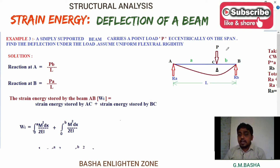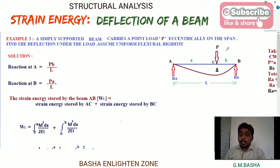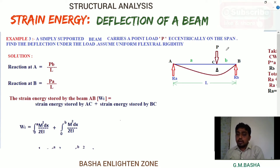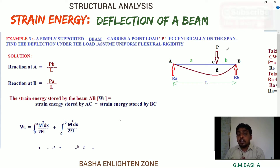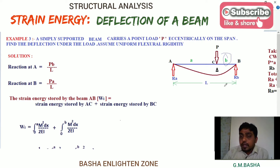If a concentrated load P is acting exactly at the center, reactions at A and B will each equal P/2. Similarly, for a uniformly distributed load, reactions at A and B each equal WL/2. But here, a concentrated load is placed eccentrically on the span, so you must remember directly: reaction at A equals P times B divided by L.